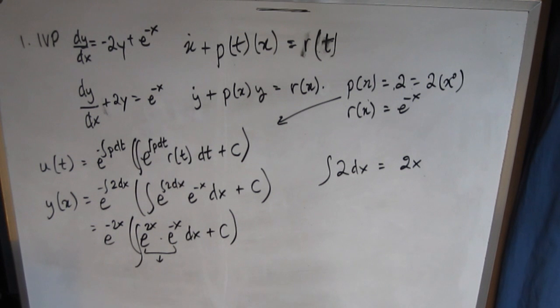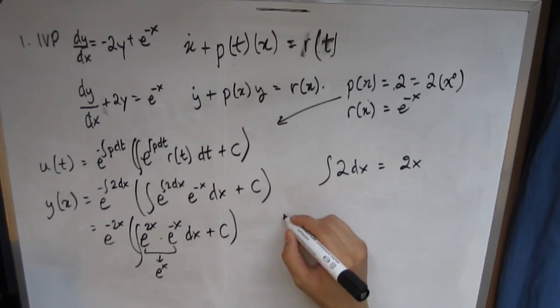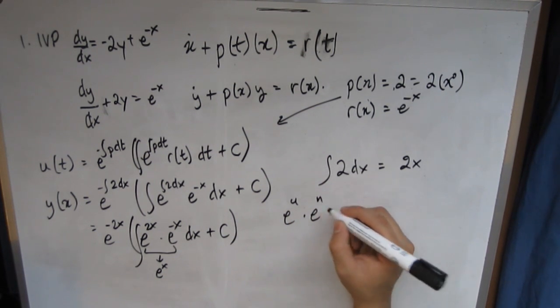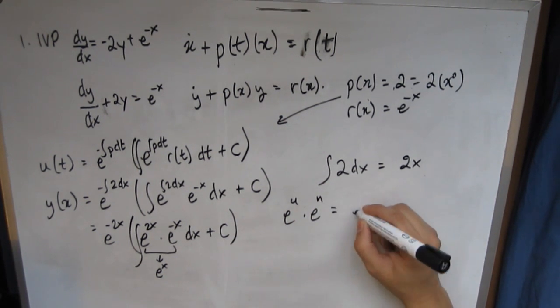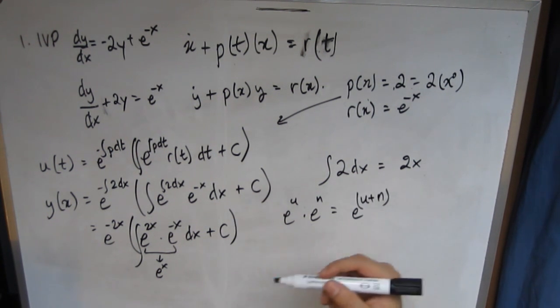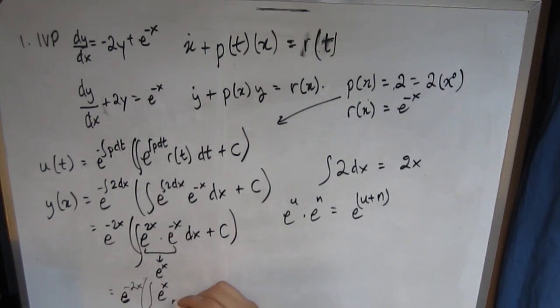This would equal e^x, which is basically because when you multiply e^u by e^n, let's say, you get the form of e^(u+n). So in this case, u is 2x and n is -x, so you get e^x. So then this would equal e^(-2x) multiplied by the integral of e^x dx + c.